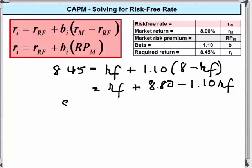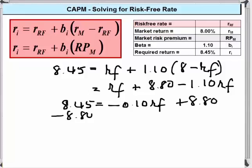Combining things, we're going to have 8.45 is equal to minus 0.10 times the risk free rate plus 8.80. We want to subtract 8.80 from both sides.